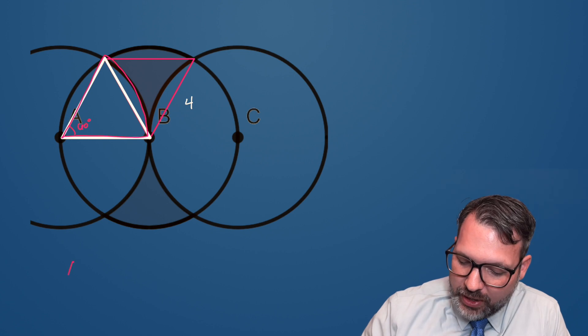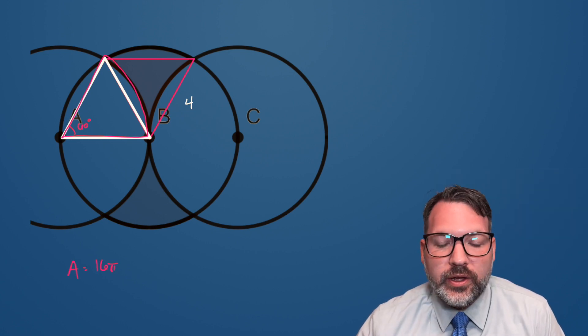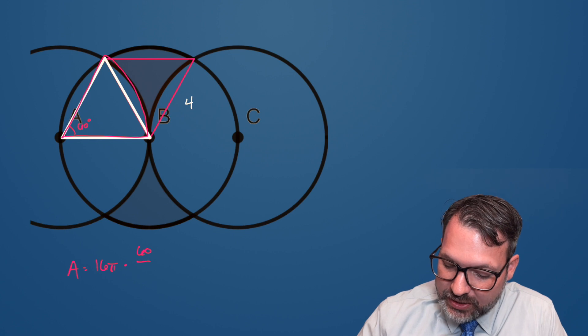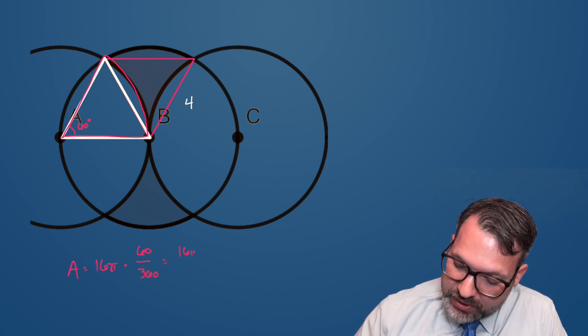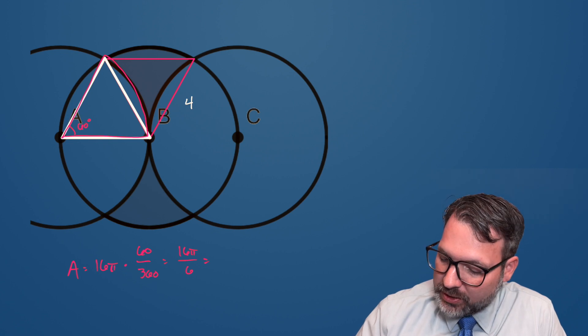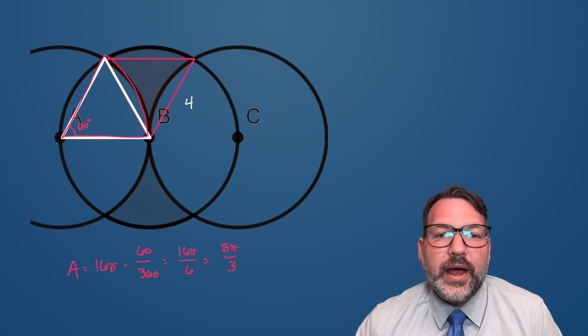has to have an area of 16π, that's the total area for the circle, times 60 out of 360, that is 1/6 of the total circle. This ends up being 16π over 6, or if we simplify, 8π over 3.